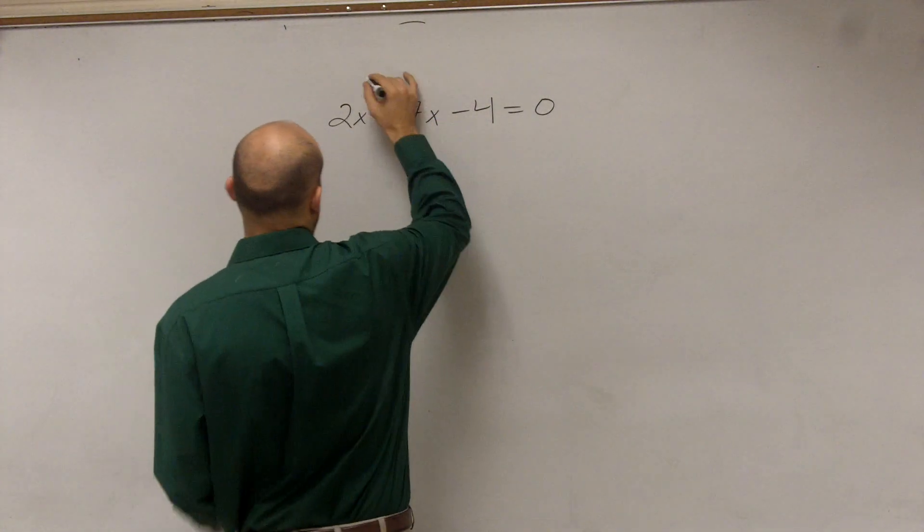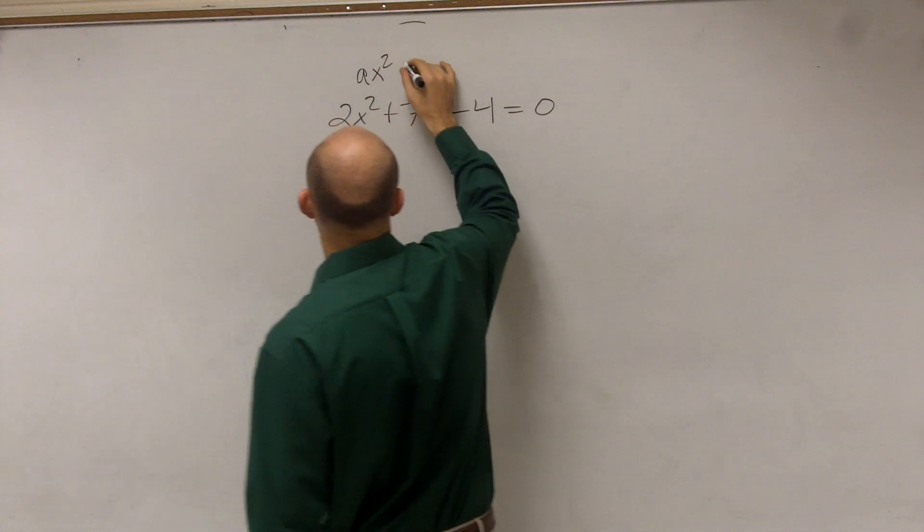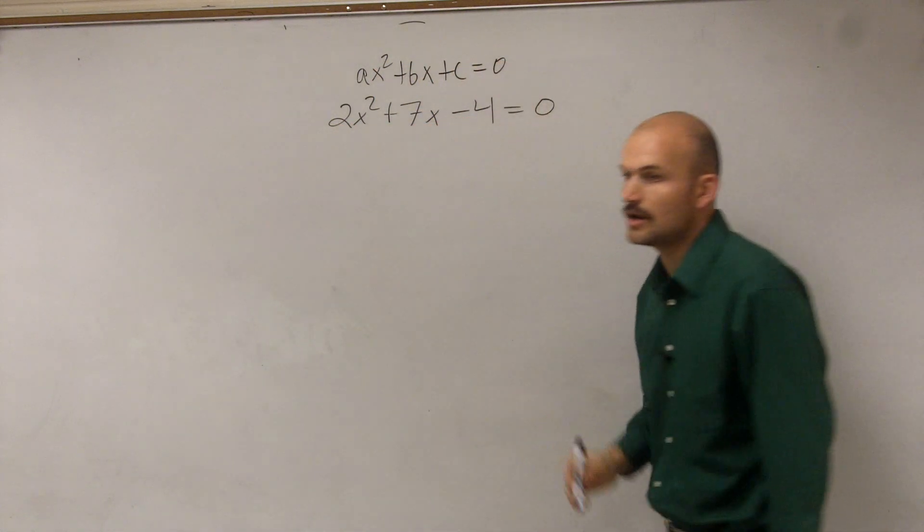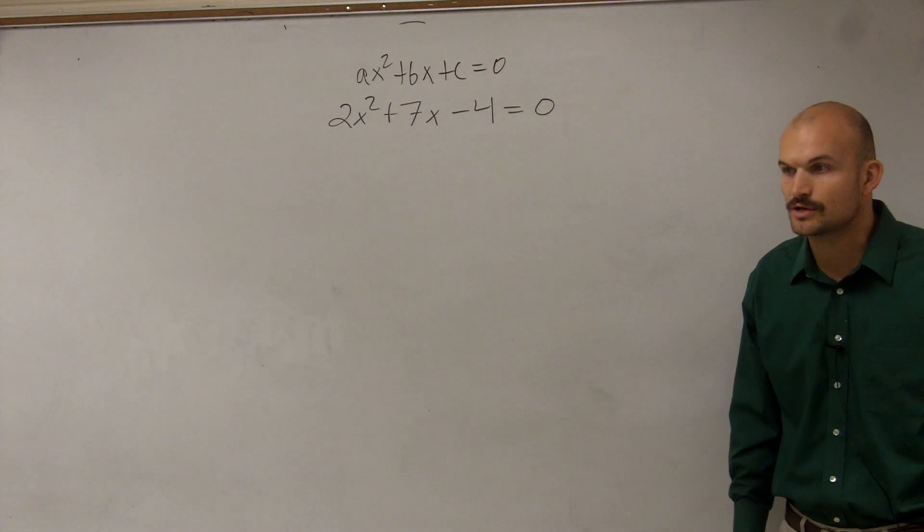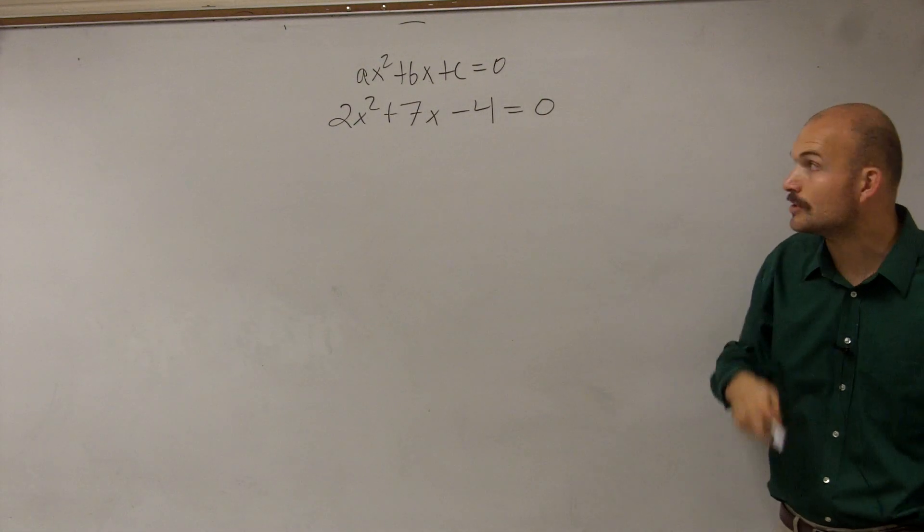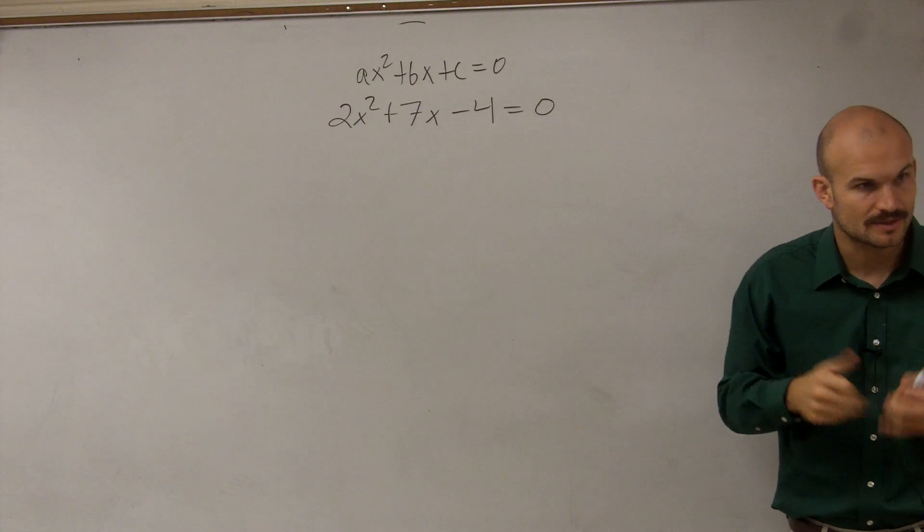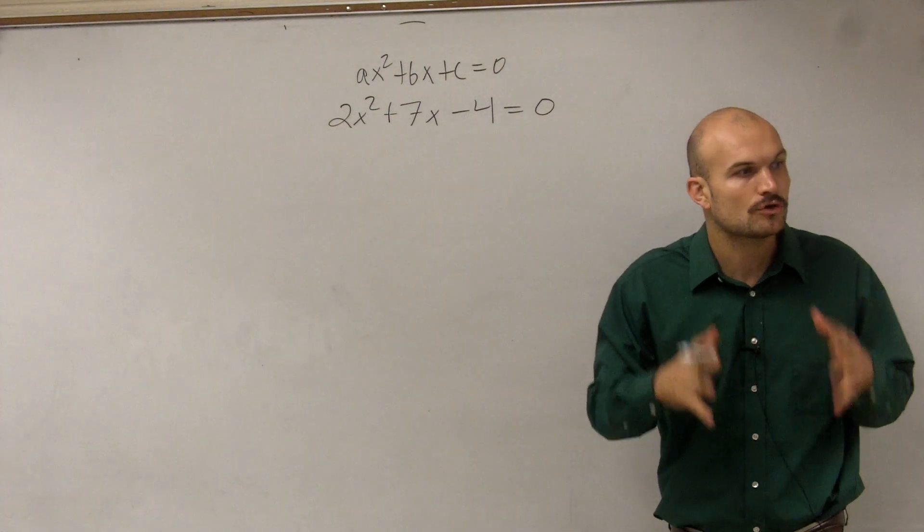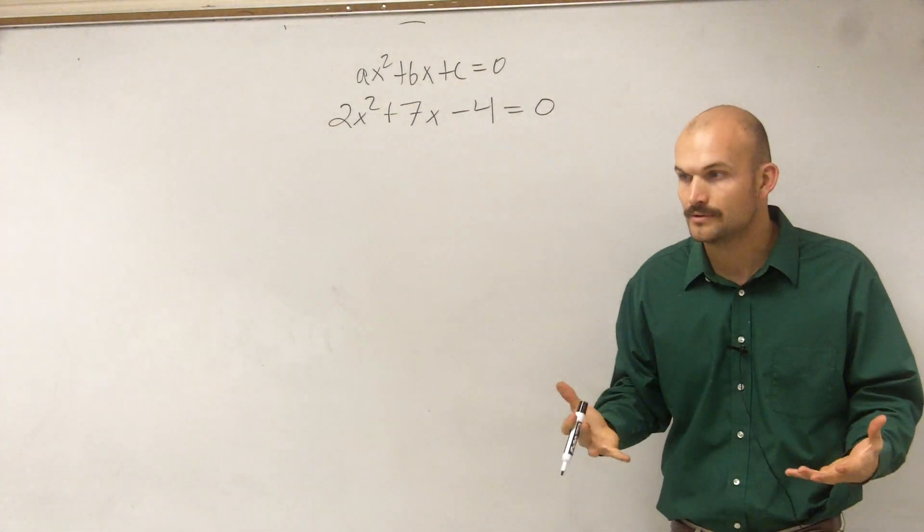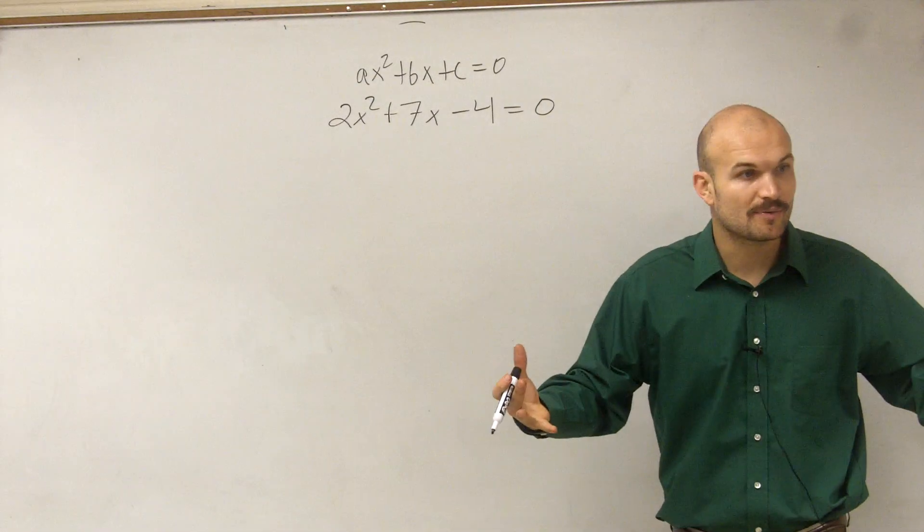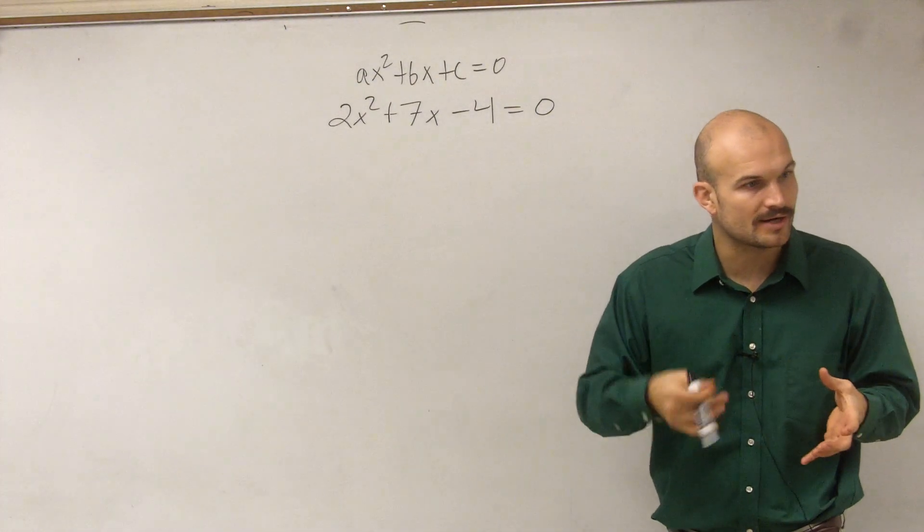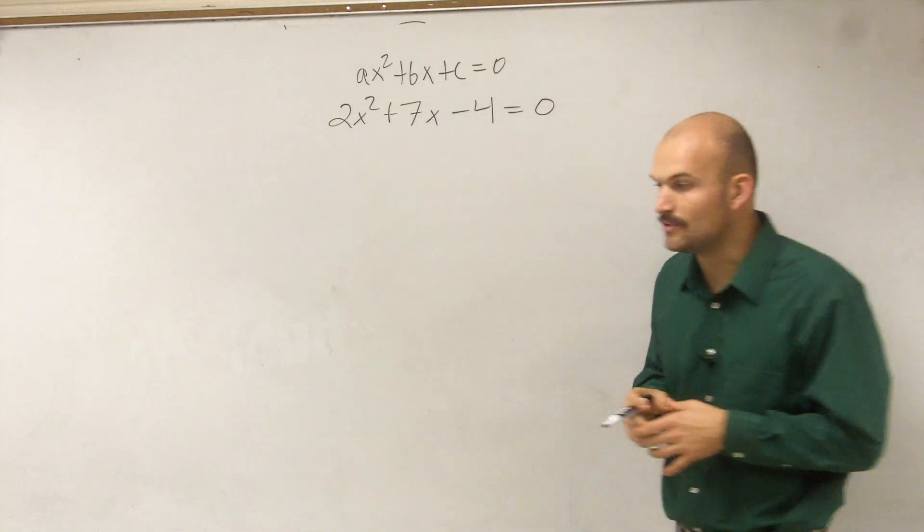So the first thing we always want to make sure when trying to complete the square or solve by completing the square is we need to make sure that we have our equation as a quadratic equation, which in this case we do. We have an A, we have a B, and we have a C. So we're good. We can complete the square. Now, remember, completing the square is all about creating a perfect square trinomial, right? Because once we can create a perfect square trinomial, we can rewrite that as a binomial squared, where we can take the square root on both sides.